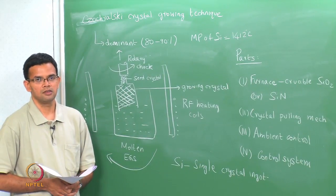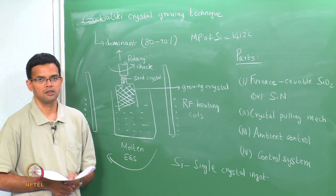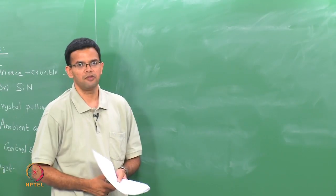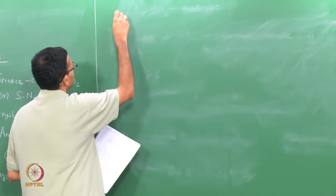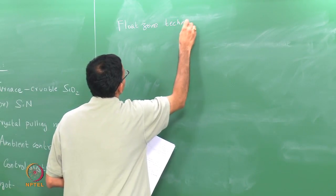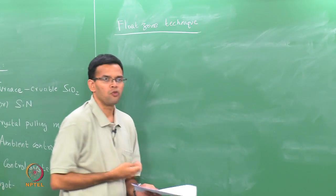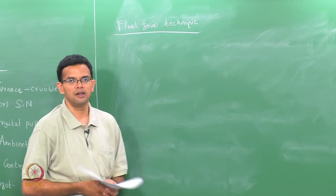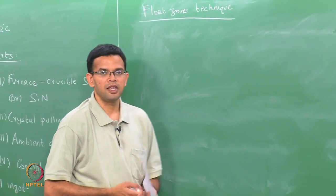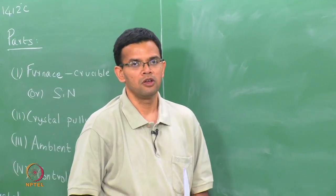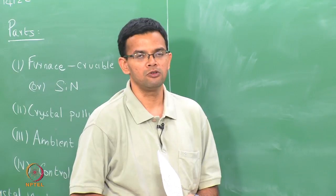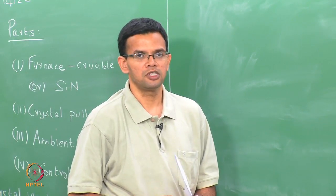The other way of producing single crystal silicon wafers is called the float zone technique. One of the drawbacks of the Czochralski growth is that it is done under ambient conditions, so there is always the possibility of oxygen inclusion in the wafer. For applications where oxygen levels must be really low, we use the float zone technique. The drawback of the float zone technique is that it cannot be used for making large wafers — it is usually used for 3-inch or 4-inch wafers, typically in research labs.